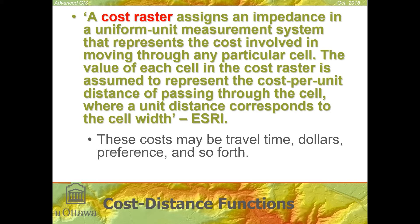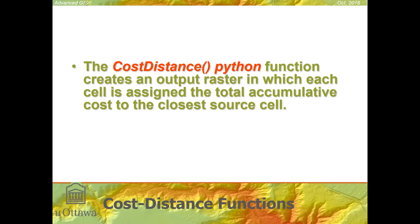These costs could be travel time, dollars, or anything that you can conceive of that's relevant to determining how easy or difficult it might be to travel through a particular location or cell in geographic space. Once we have a cost raster, we can use the cost distance function in Python or the cost distance tool in the toolbox to create a least accumulative cost raster in which each cell has assigned to it the minimal cost to get back to the source.